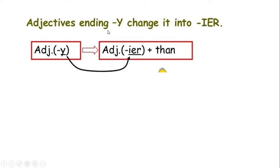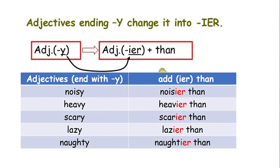Adjectives that end with Y change to -ier. For the adjective that is ending with Y, when we make a comparison, we add -ier. For example, noisy — if you look here, this word ends with Y. So when we compare it, we add -ier.